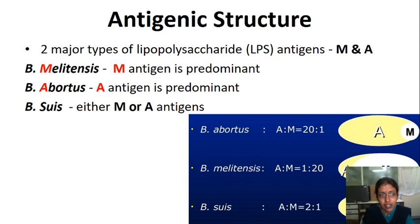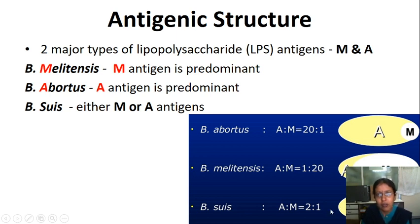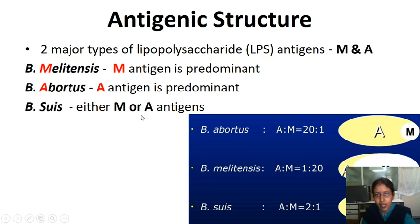Regarding antigenic structure: the major species of Brucella are classified based on lipopolysaccharide antigens — A and M antigens. In Brucella abortus, the A antigen is predominant in a ratio of 50:1 over M antigen. In Brucella melitensis, M antigen is predominant compared to A antigen. In suis, either A or M antigen can be predominant. These antigens are present in varying proportions in the three major species.